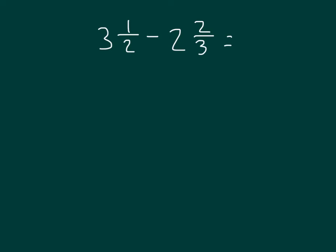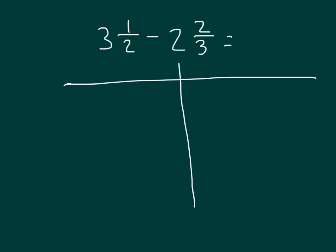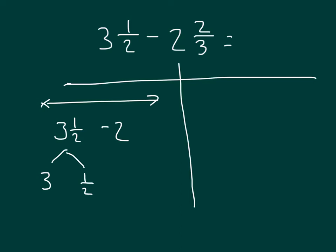Here we have 3 and a half minus 2 and 2 thirds. I am going to show you two approaches to solve this problem. With Method 1, let's draw a number line. We can break apart 3 and a half into 3 along with its fractional part of 1 half. And we are subtracting 2 and 2 thirds, which can be broken down into 2 along with 2 thirds, and remember we are subtracting both of those.